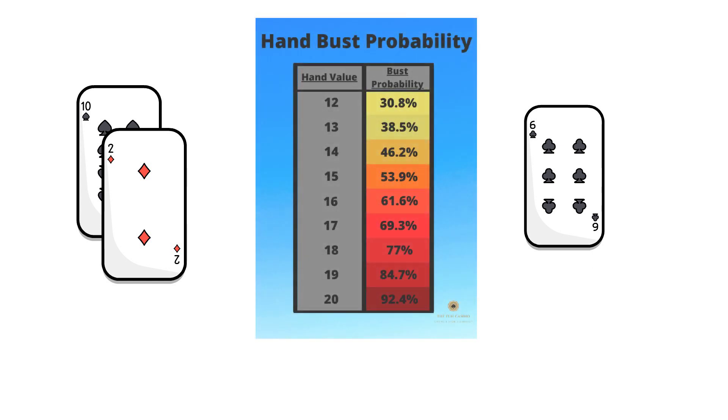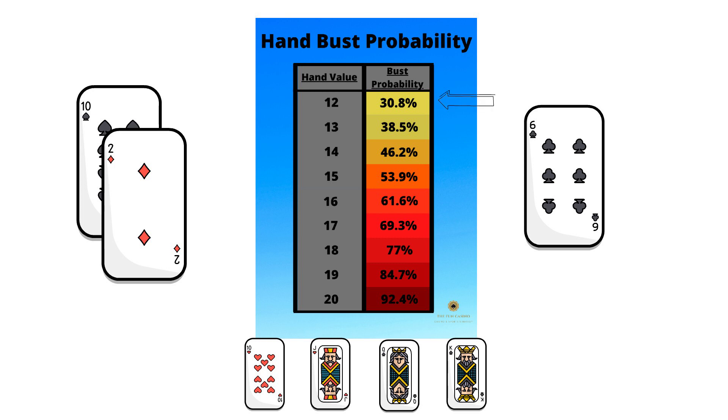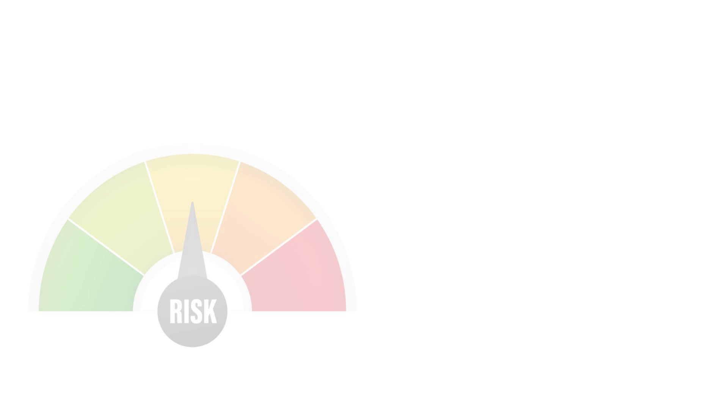With a score of 12, we are still at risk of going bust. There are four cards—10, jack, queen, and king—meaning the probability of going bust is just 30.8%. But is this a risk we need to take?